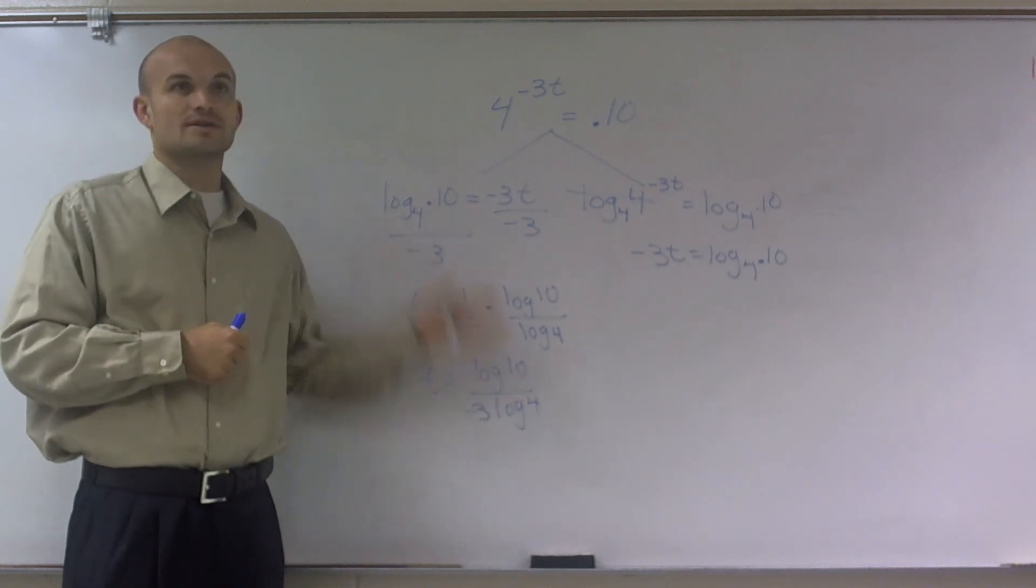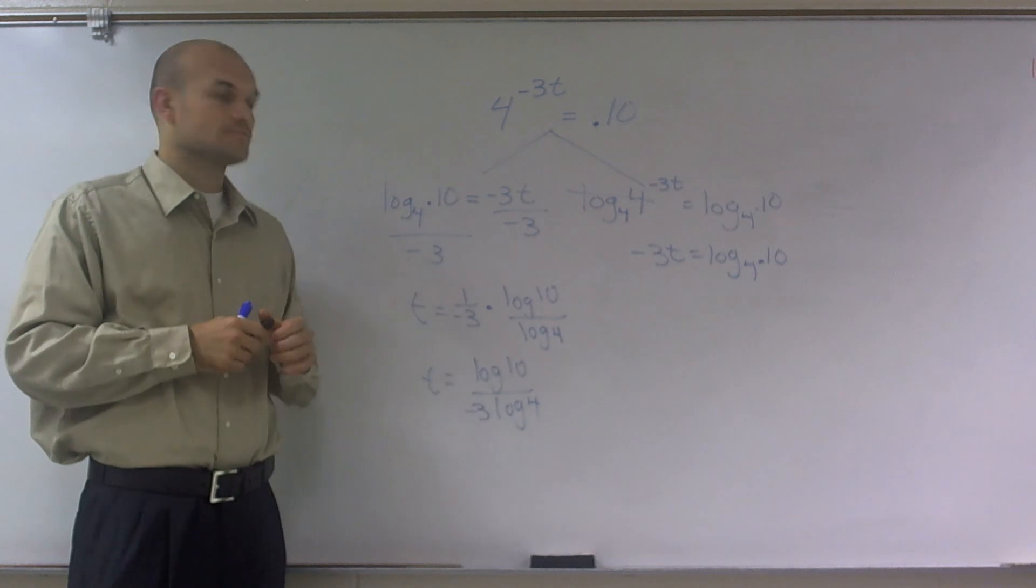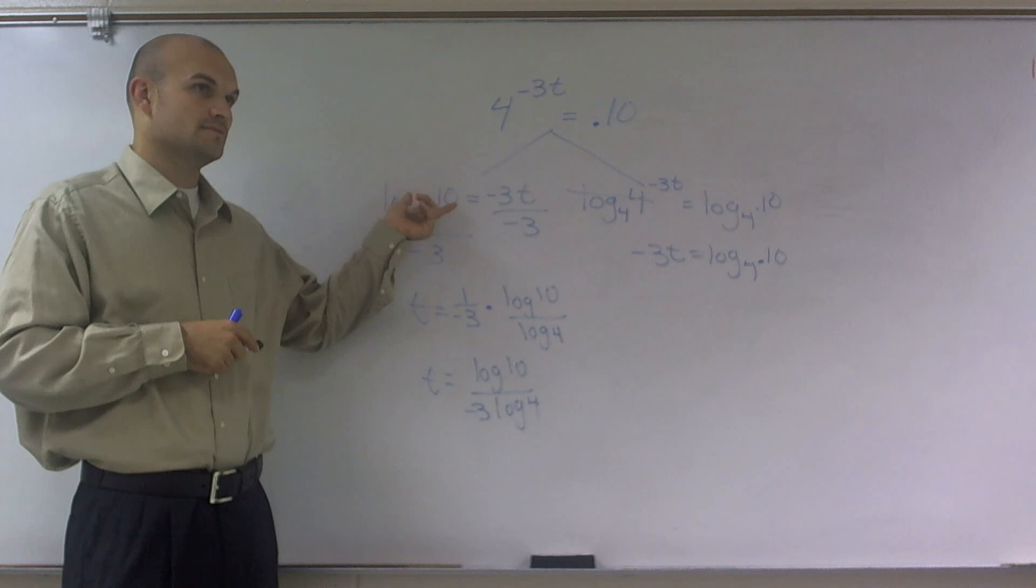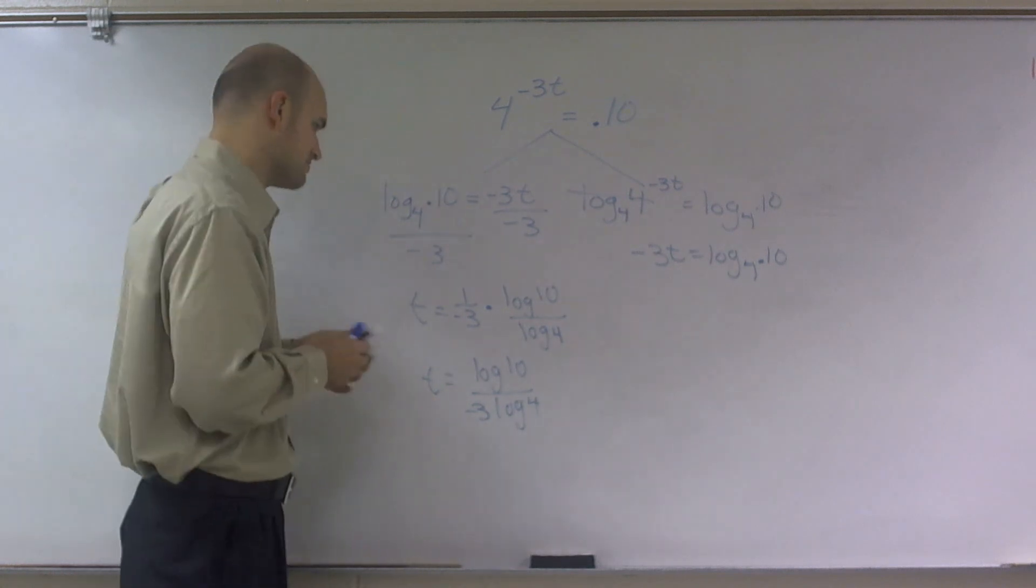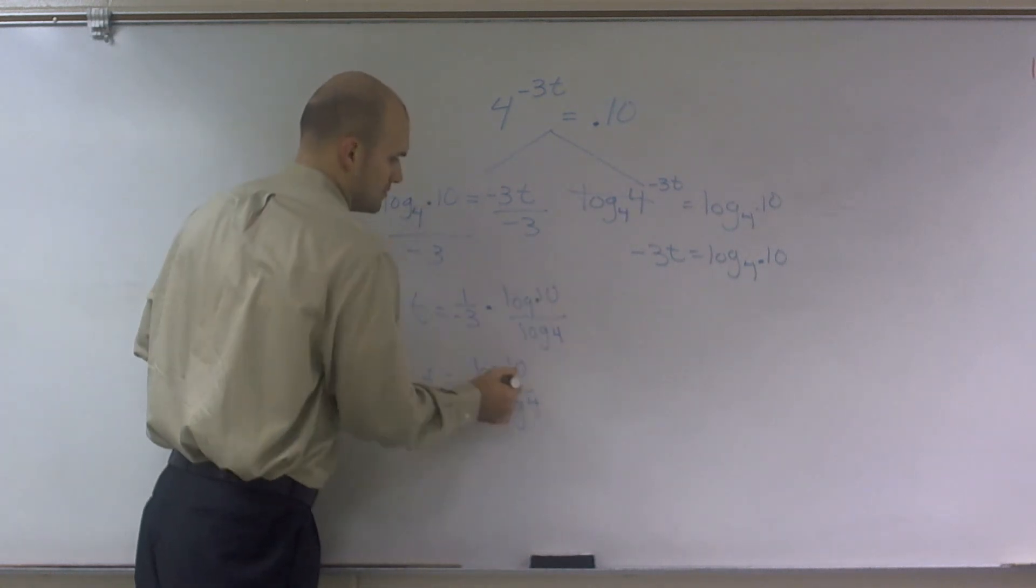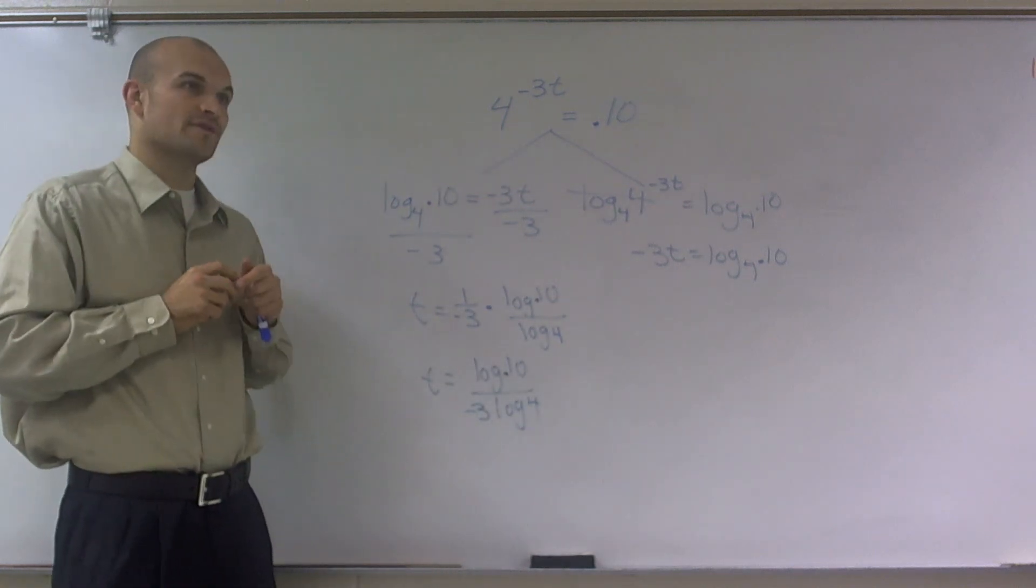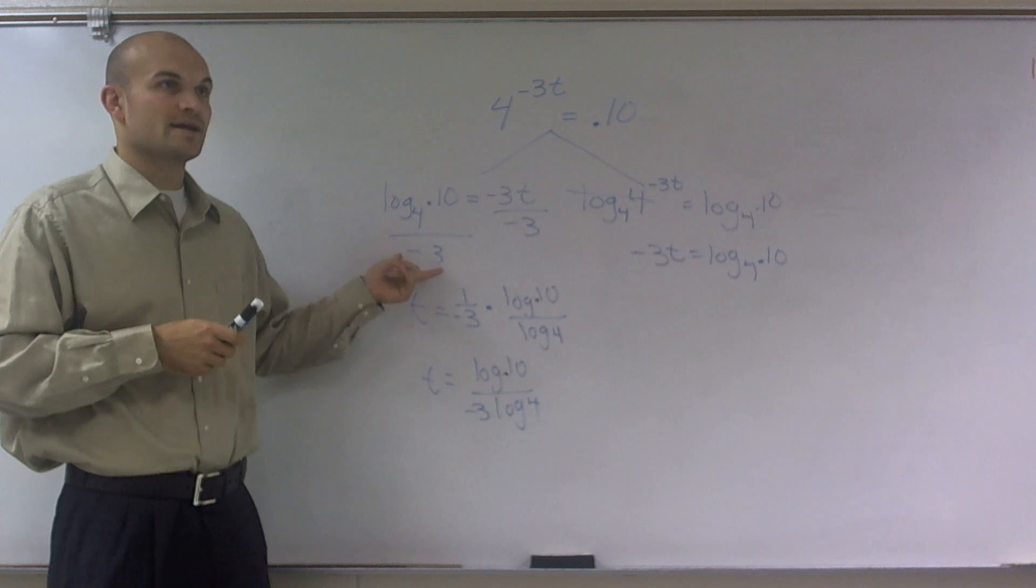Anybody have any questions on this? Wait, so you divide the logs and then divide it by negative 3? You could do log base 10—or log base—I'm sorry, this is 0.10, right? Yeah. You can do log of 0.10, divide it by log of 0.4, and then divide that by negative 3. Just 4.